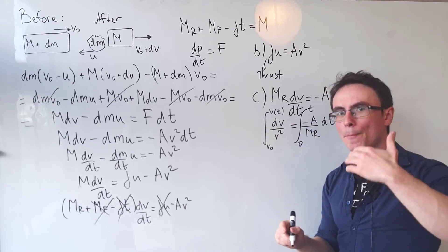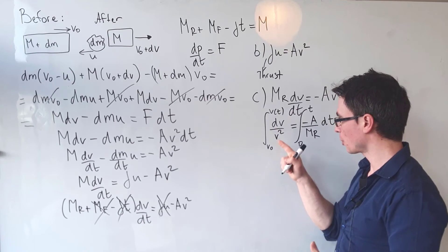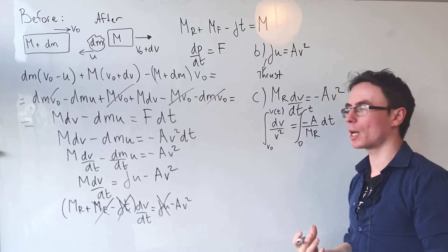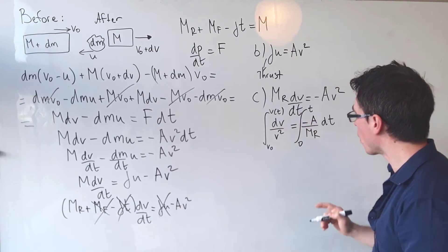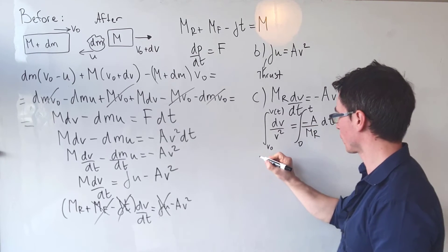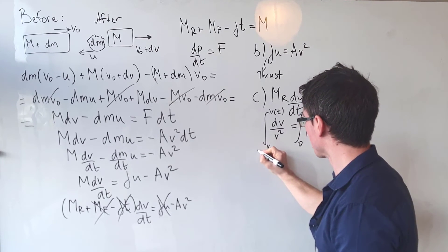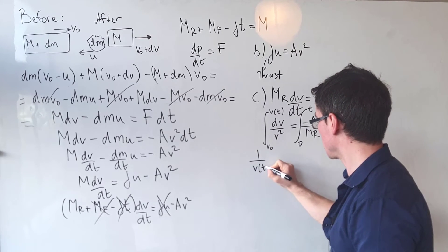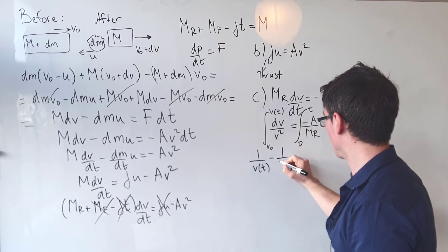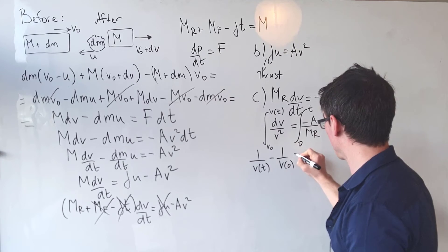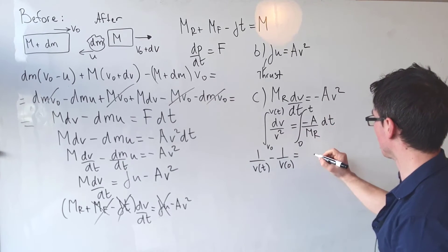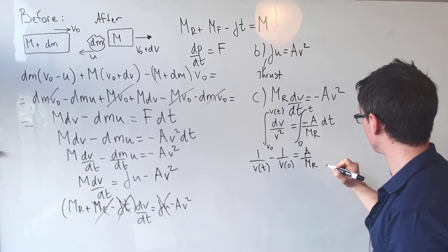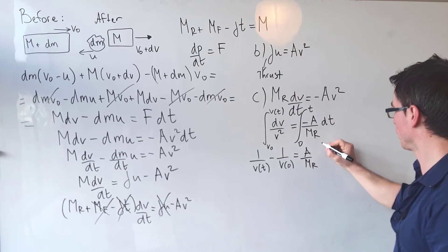The integral of 1/v² is -1/v. Integrating and multiplying by -1 to eliminate the minus sign, we get: 1/v(t) - 1/v₀ = (a/m_R)·t.